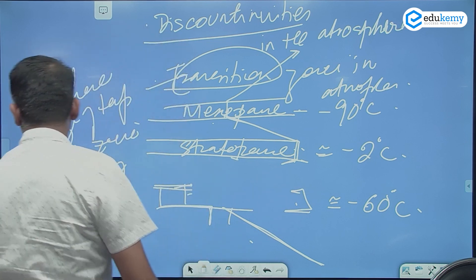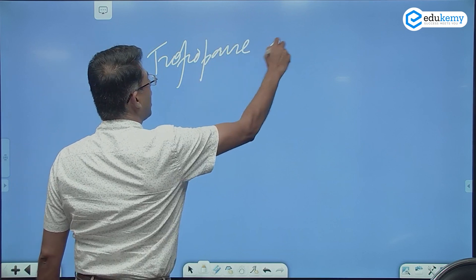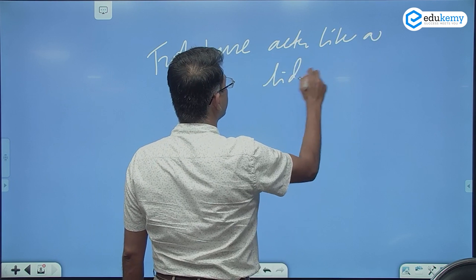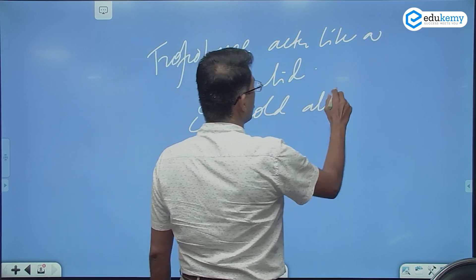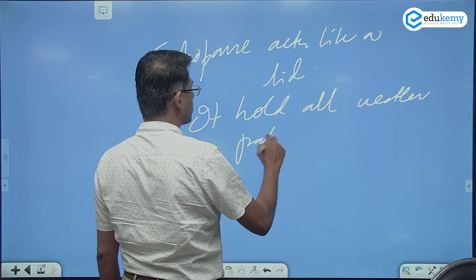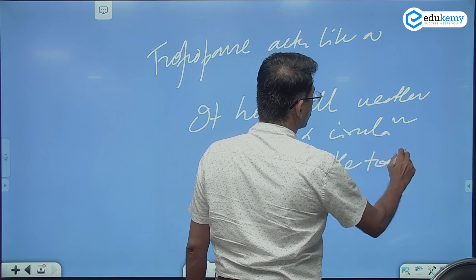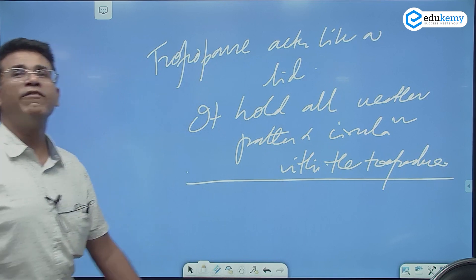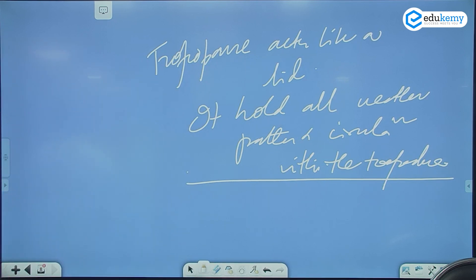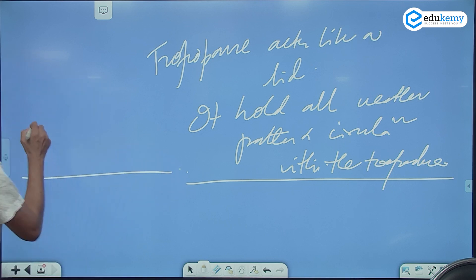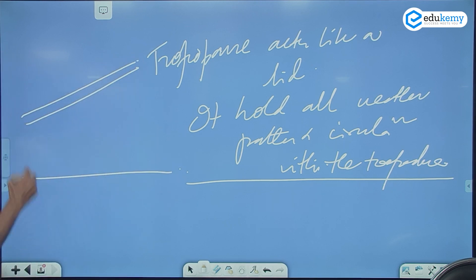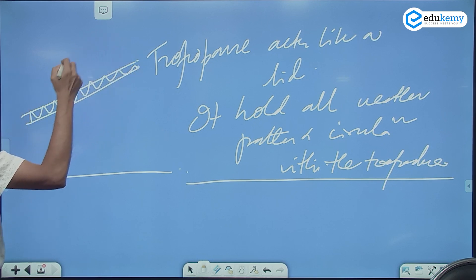The tropopause acts like a lid. It holds all weather patterns and the circulations within the troposphere. The width of the tropopause is approximately around 2 kilometers. The surface is here and the tropopause is like a layer. Keep it at around 2 kilometers height, and temperature is minus 60 degrees centigrade.